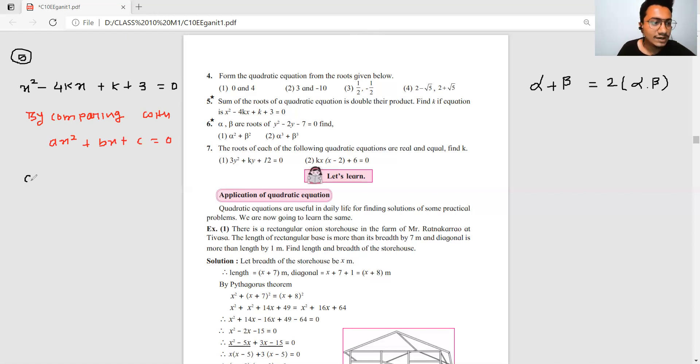So you get the values: a equals 1, b equals minus 4k, and c equals k plus 3.